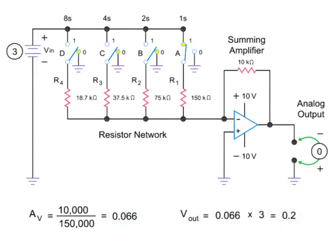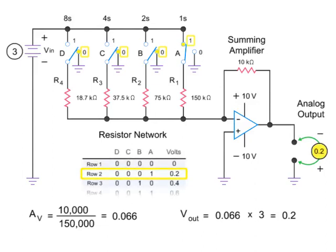Thus, a binary input of 0, 0, 0, 1 yields an output of 0.2 volts in accordance with the truth table described previously.